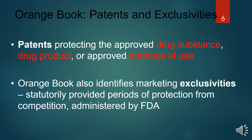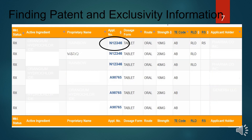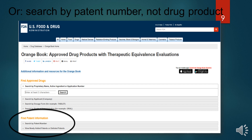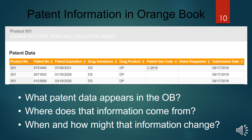The Orange Book helps identify marketing exclusivity and provides a period of protection from competition administered by the FDA. You can find patent and exclusivity information including the patent number, applicant patent expiration, drug substance or product details, patent use code, exclusivity data, and expiration. You can also search by patent number rather than by drug product.